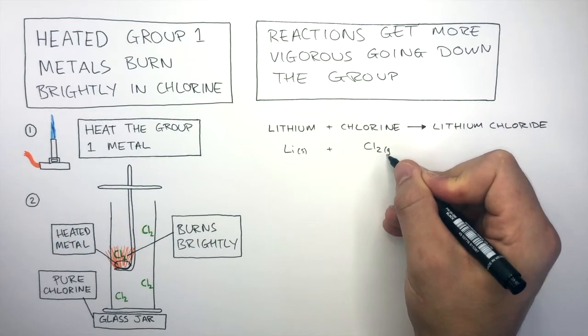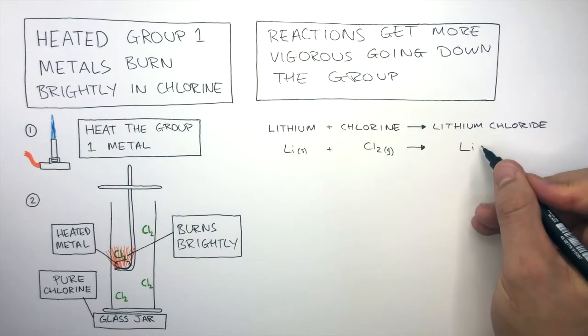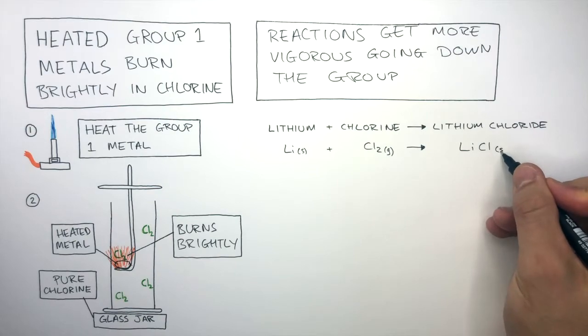G in brackets because it's a gas, react to form LiCl, and then S in brackets because it's a solid.